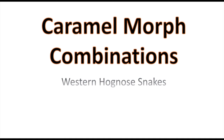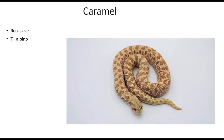Today we're going to be talking about the caramel morph in western hognose snakes and show you pictures of what that looks like, as well as what it looks like when combined with other incomplete dominant genes as well as other recessives. So let's get started. The caramel gene is recessive and it's also a T-plus albino.